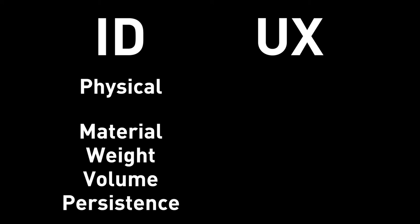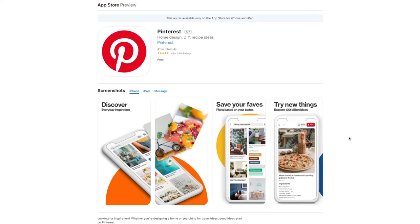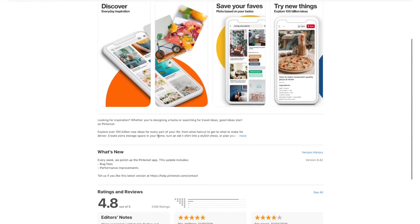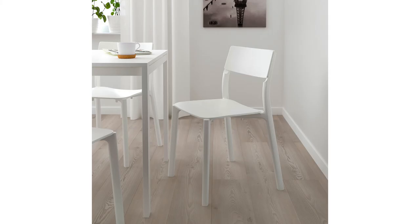Industrial designers work with mechanical engineers to mass produce a product. UX designers work with software engineers to create a product in a programming language. Industrial designers design physical objects — they are tangible, they have weight, they have volume, they are persistent and pretty much stay the same one week, one month, one year from now. UX designers design something digital — it's intangible, invisible, doesn't have weight, and does not take up space in your house. It's very fluid. You can change it often. Pinterest, for example, updates the app every two weeks, meaning you get a new version every two weeks.